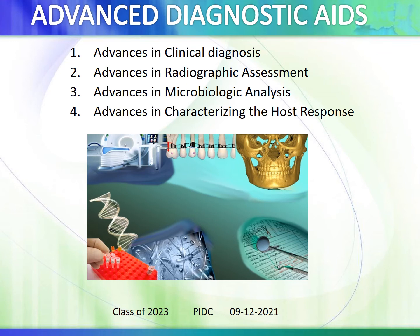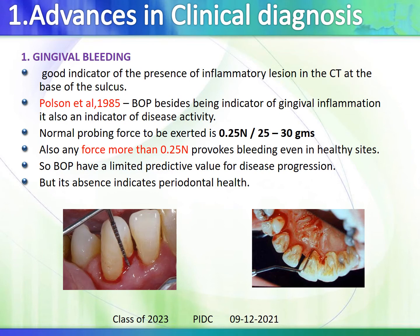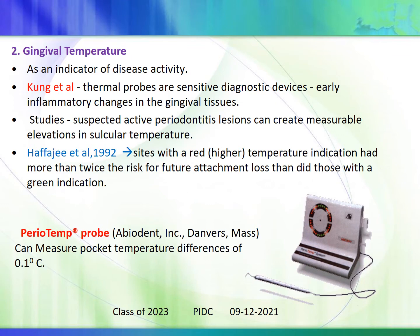Advanced diagnostic aids are explained in four categories: clinical diagnosis, radiographic assessment, microbiological analysis, and characterizing the host response. Starting with clinical diagnosis, gingival bleeding — though traditional — is a good indicator of inflammatory lesion at the base of the sulcus. Person (1985) stated bleeding on probing is also an indicator of disease activity. A normal probing force of 0.25 Newton is sufficient; more than 0.25 N will result in bleeding even in healthy sites. Absence of bleeding on probing indicates periodontal healthy status.